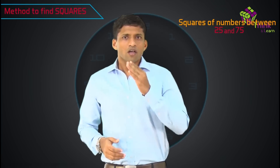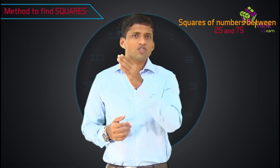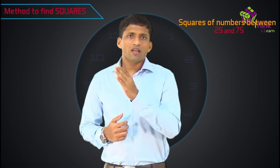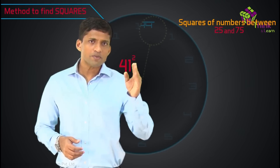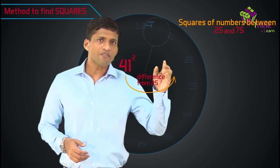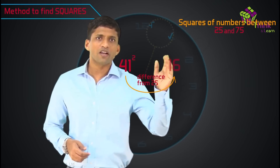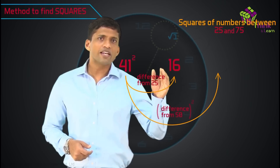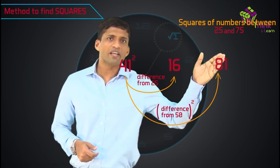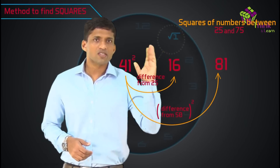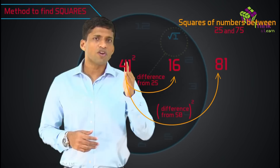Assuming that you know squares of numbers up to 25, how do we extend it from 25 to 75? The method is very simple. To find squares of numbers between 25 and 75, let's take 41 square as an example. Two very simple steps: first, take the difference from 25 and write it as the first two digits — that's 41 minus 25, which is 16. Then take the difference from 50, which is 9, and write the square of that as the last two digits, which is 81. So 41 square is 1681.